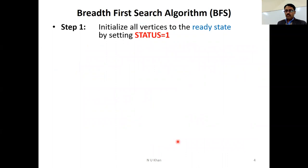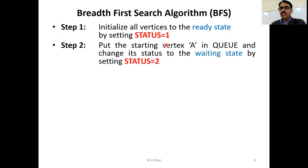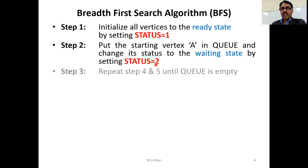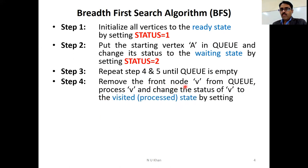Now come to the algorithm. In the first step, we will create an empty queue and initialize all vertices to the ready state by setting flag value to 1. In the next step, choose the starting vertex — that is capital A — add it to the queue, and change its status to the waiting state by setting flag value to 2. In step three, repeat next steps four and five until the queue is empty. Remove the front node from the queue and process it — we will visit it.